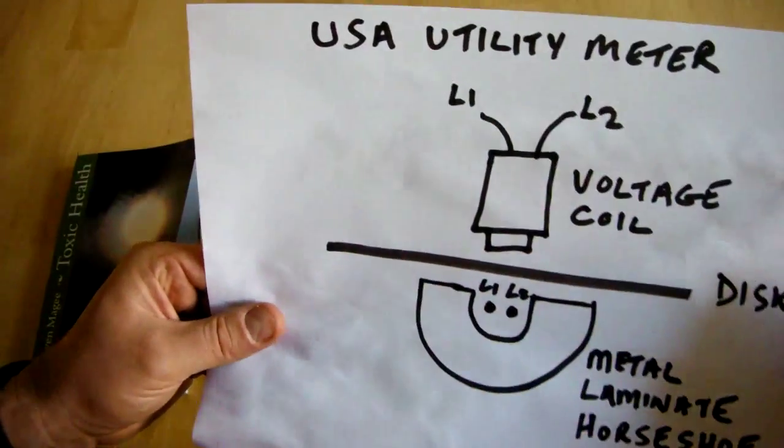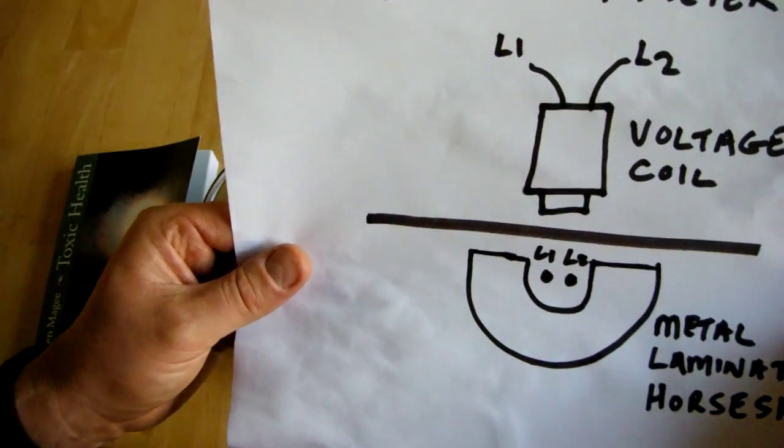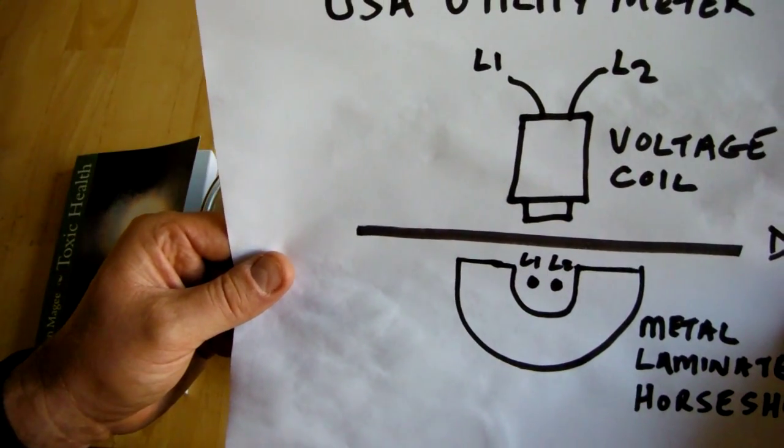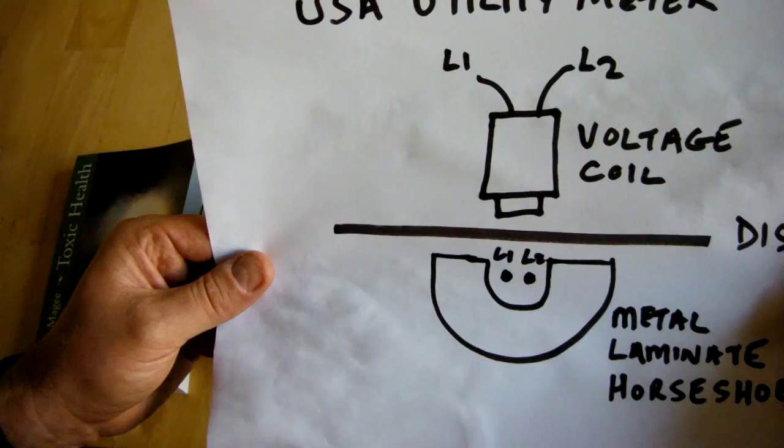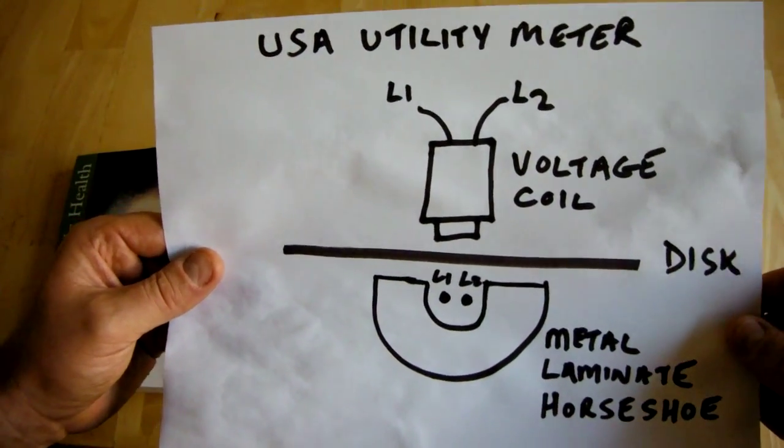And that spinning is activated by the voltage coil and the interactions with the magnetic fields being generated by the current flowing in live one and live two. So it's a very simple device.